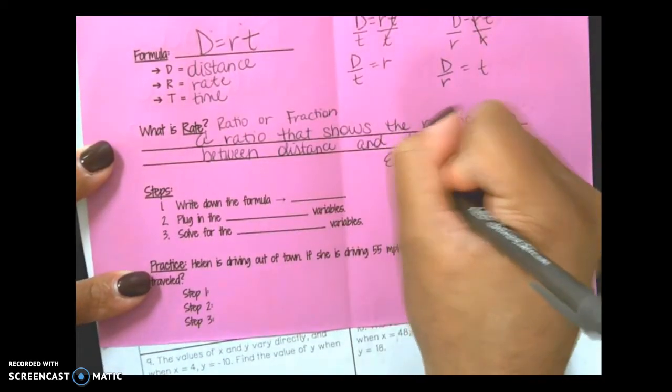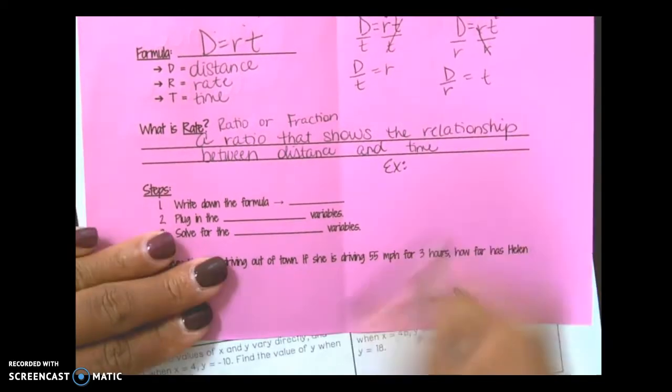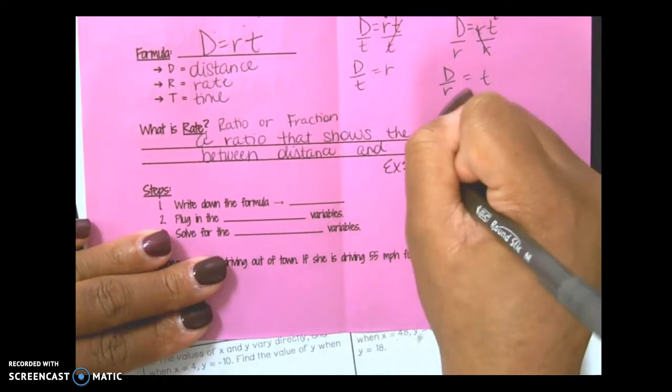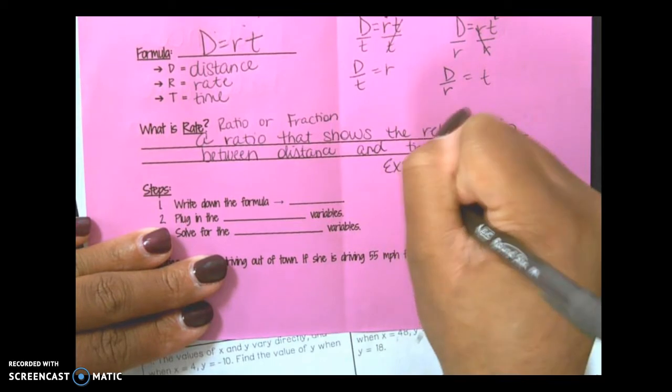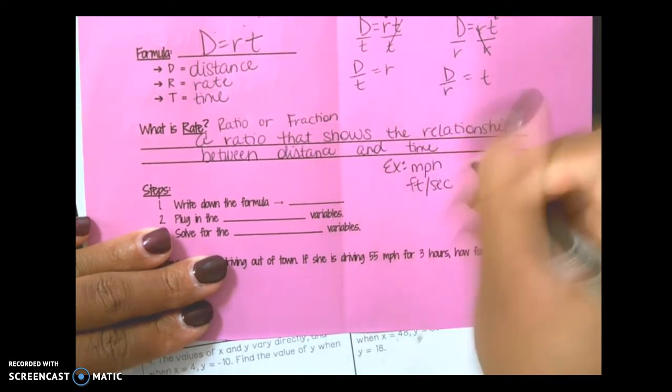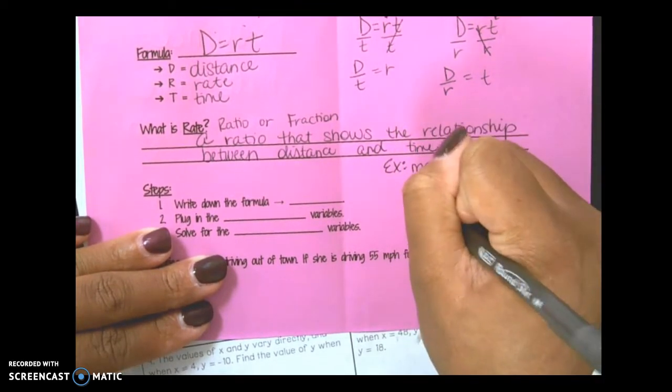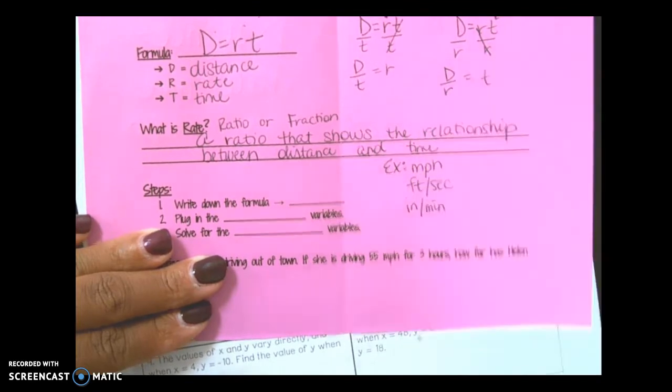Examples of rates: miles per hour, feet per second, inches per minute, and so on.